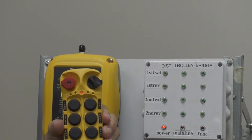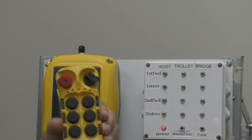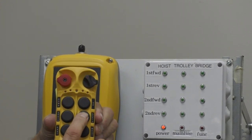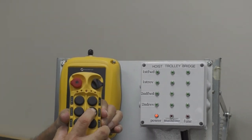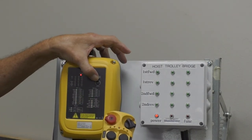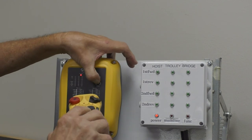To program, to pair up the transmitter with the receiver, I want to push button number three, push that down, go to the receiver and hold this pairing button down for five seconds.